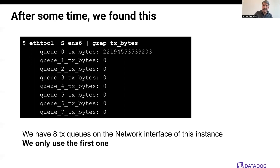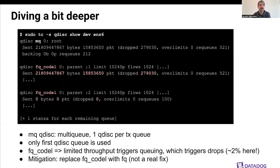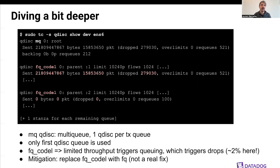That's weird. Diving deeper and looking at the queuing discipline configuration — we use the default setup, which means we use FQCoDel as the main queuing discipline. Because we have eight physical queues, we also use the virtual multi-queue queuing discipline, which sends traffic to the different FQCoDel queues — one FQCoDel queue per physical device. As expected, because we're only using a single device, we also use a single FQCoDel queue, as you can see with the numbers here.